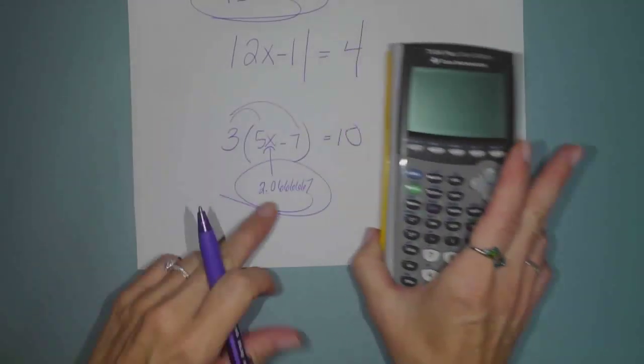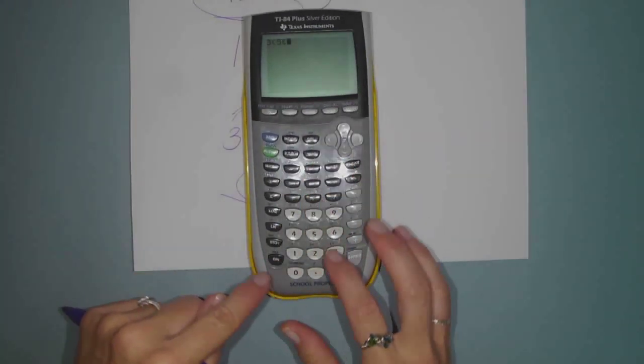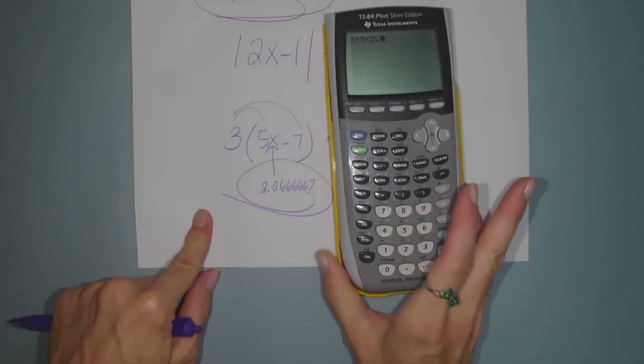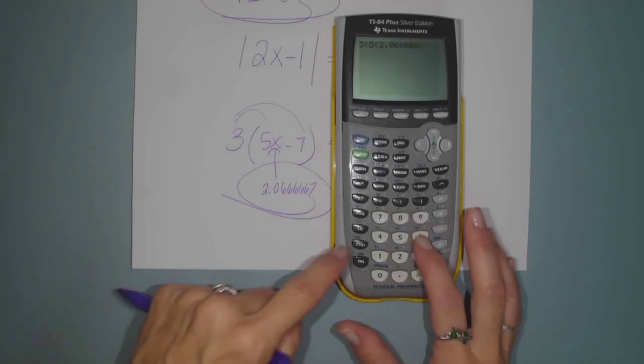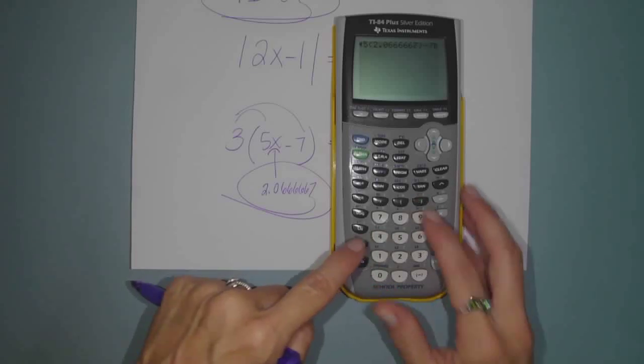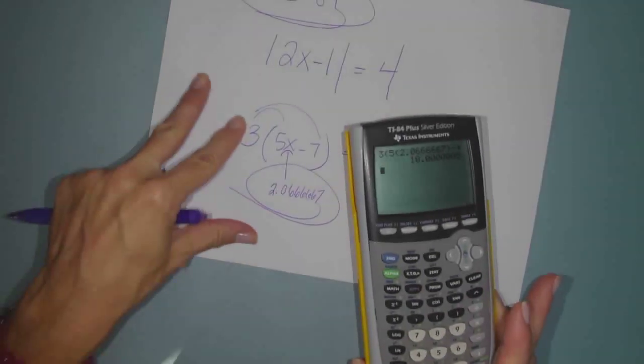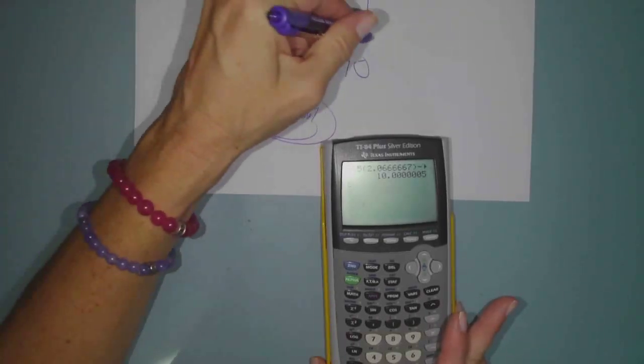If I come out of here, if I do 3, quantity 5 times 2.0 with six 6s minus 7. Look what I get. Something very, very, very close to 10.